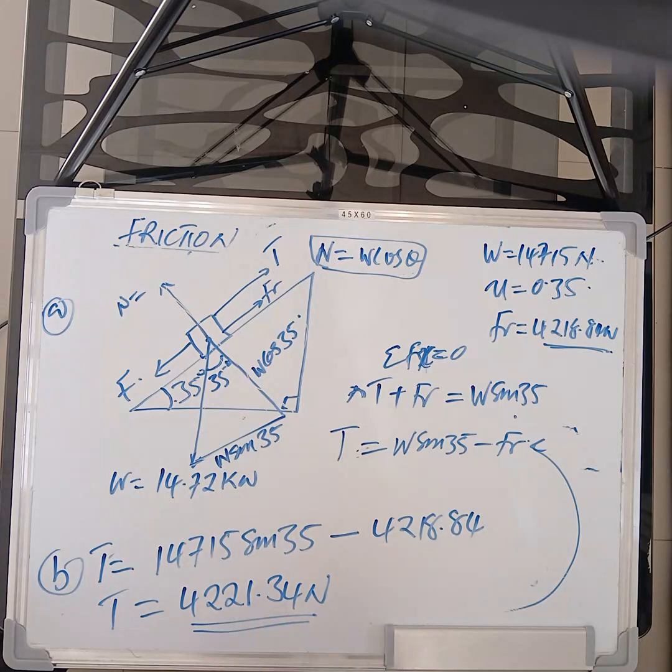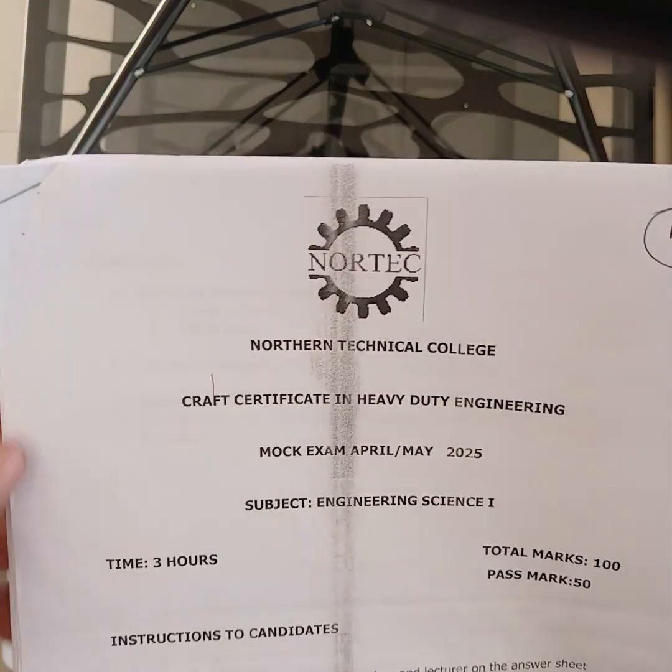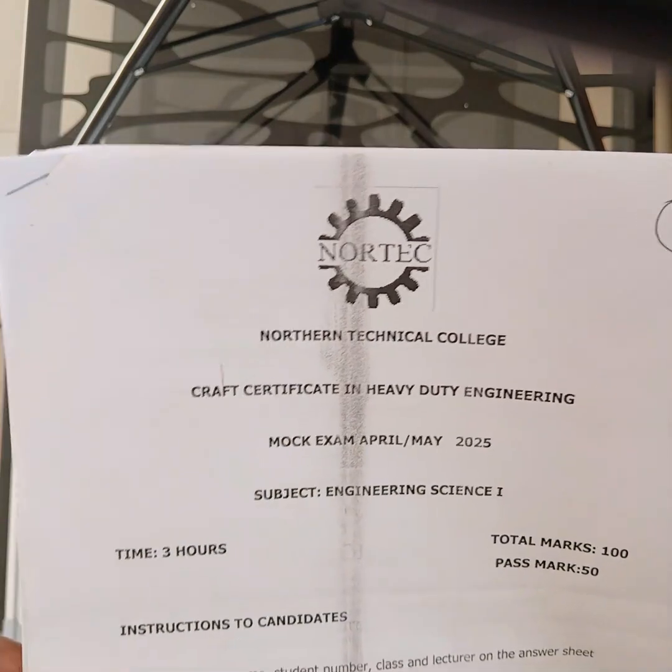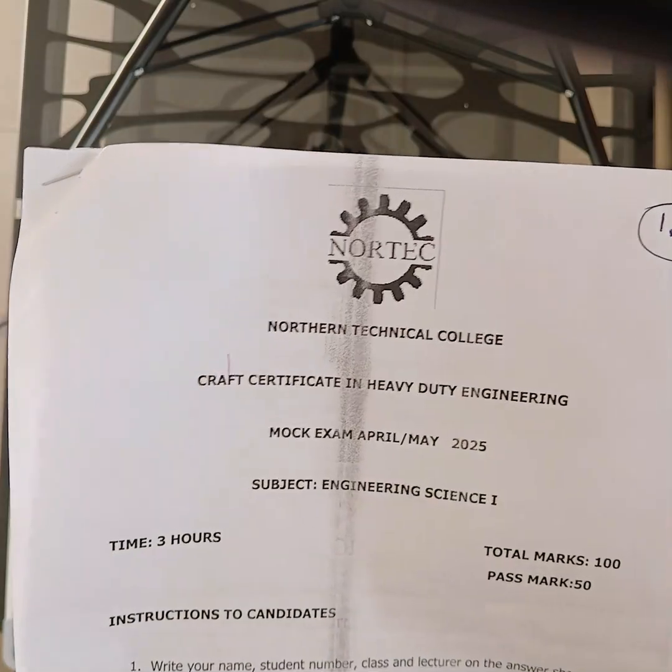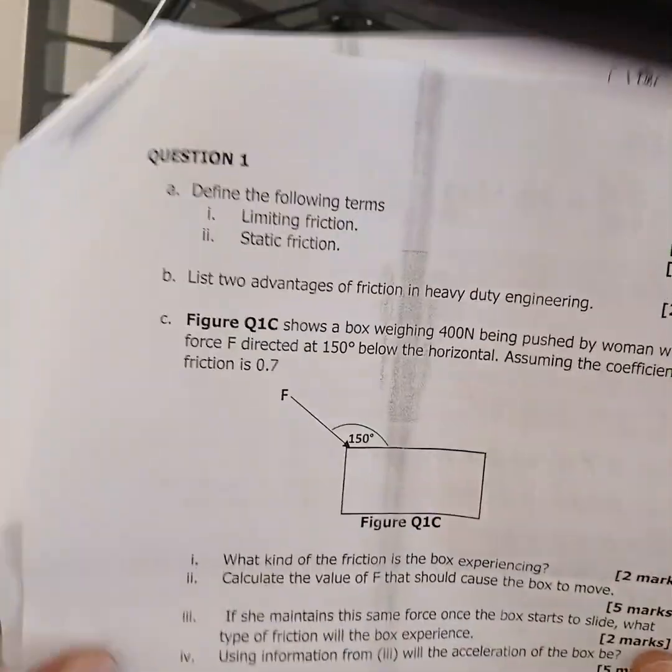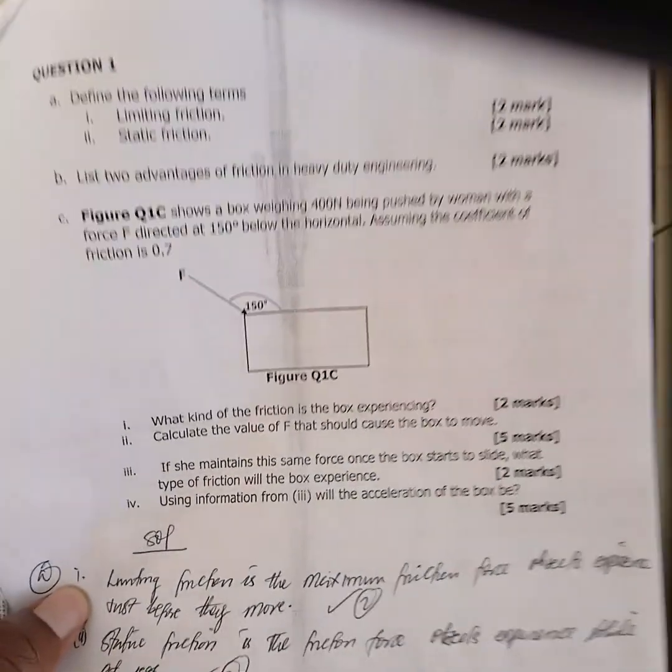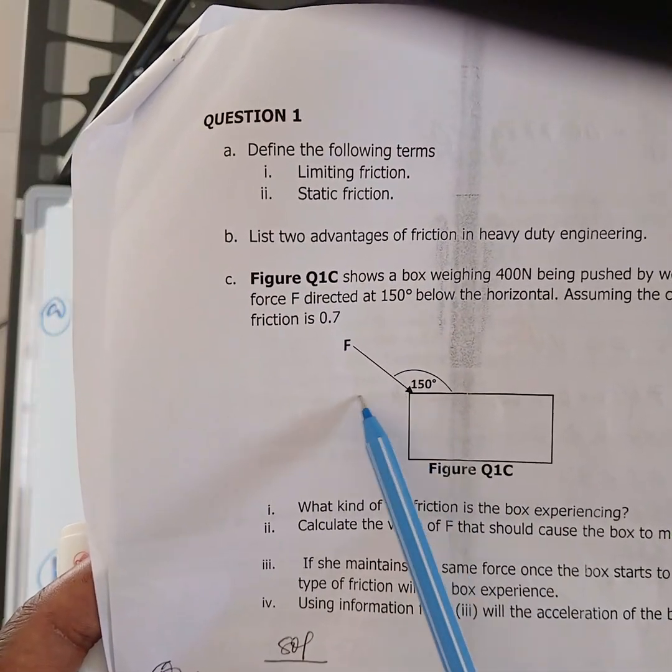Then last thing that definitely you need to be so much aware is the angles, how the angles they come. So this was mock exam that your friends wrote. This is a craft certificate in heavy duty equipment. Of course, it was combined with the diploma and advanced certificates. What I want to show you is how the question came.